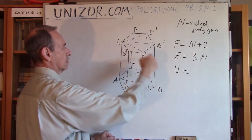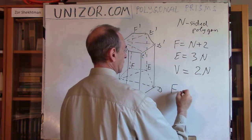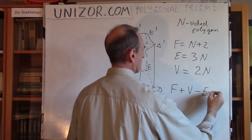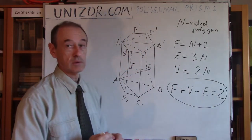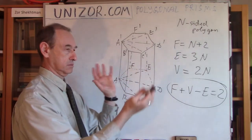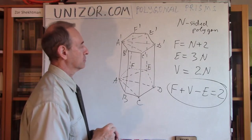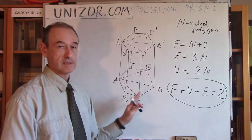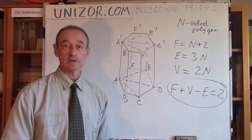Notice that F + V − E = 2. This is Euler's formula. For any polyhedron — not only for a prism but for any, whatever non-prismatic kind of polyhedron — the formula is true. I'm talking about the N-sided polygonal prism, and for the polygonal prism this formula is true, as we see.